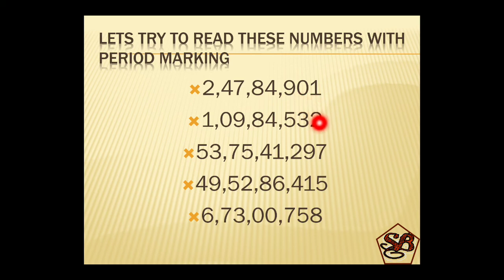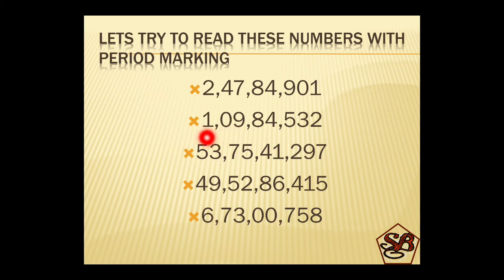Let's come to the next number. First period after three digits. Second period after two digits. Third period after two digits. Again the number is starting from crores: one crore, nine lakh, 84 thousand, five hundred and thirty two.